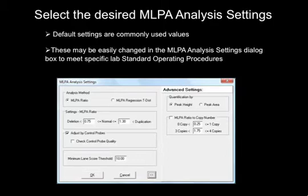Radio buttons and checks are used to select analysis method, adjust by control probe, and quantification options. MLPA ratio on the left side of the dialog box and MLPA ratio to copy number on the right side of the dialog box may be customized by typing in the values.